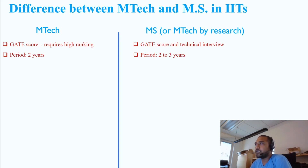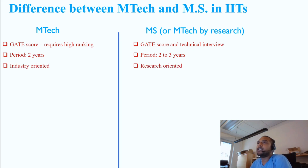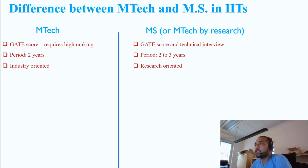Beyond three years in MS there is probably no funding, though your supervisor can arrange for some funding. MTECH is mostly industry oriented — you are trained to go into industries or companies — whereas MS is more research oriented. MS is like a mini PhD where you are trained to do research and development.